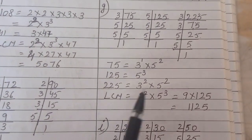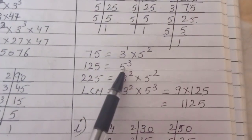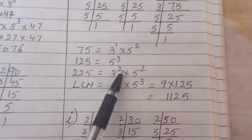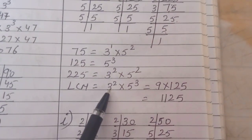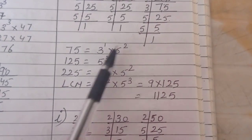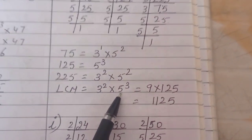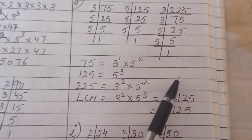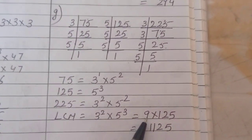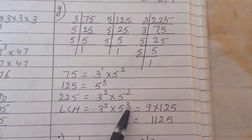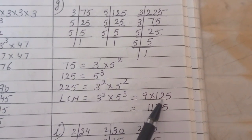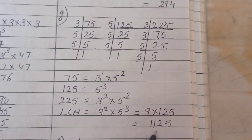Let's take the LCM. 3 power 1 is there, and 3 power 2 is there — the greatest power is 3 power 2, so that is taken. 5 power 2 and 5 power 3 — the greater is 5 power 3. No other number is there. Now multiply: 3 squared means 9. 5 power 3 means five fives are 25, 25 fives are 125. Multiply — that will be your LCM.